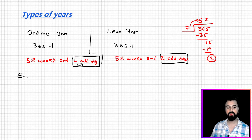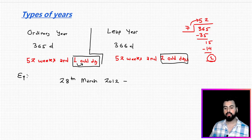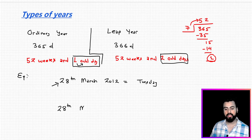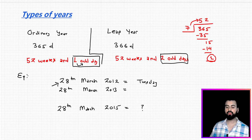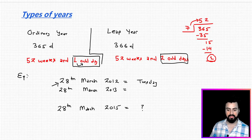Let me discuss an example. If I tell you that 28th March 2012 was a Tuesday, and now keeping this as reference, if I ask you to find the day on 28th March 2015, you would say: very easy — if I go one year forward from 2012, the year is going to be 2013.